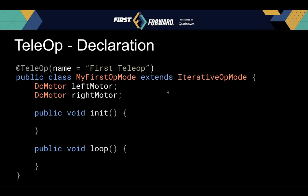Inside our class definition, we're going to define two motor variables — in this case, two DC motors: left motor and right motor. We're going to run a basic push bot. The only methods you'll need for this are the init function and the loop function, and these are inherited from IterativeOpMode.